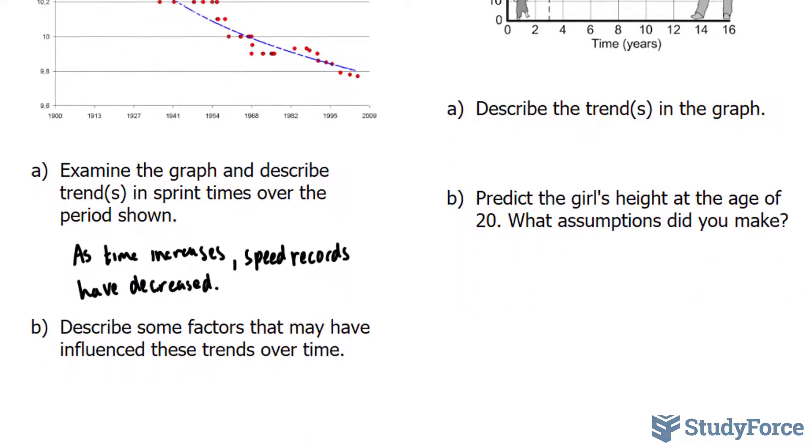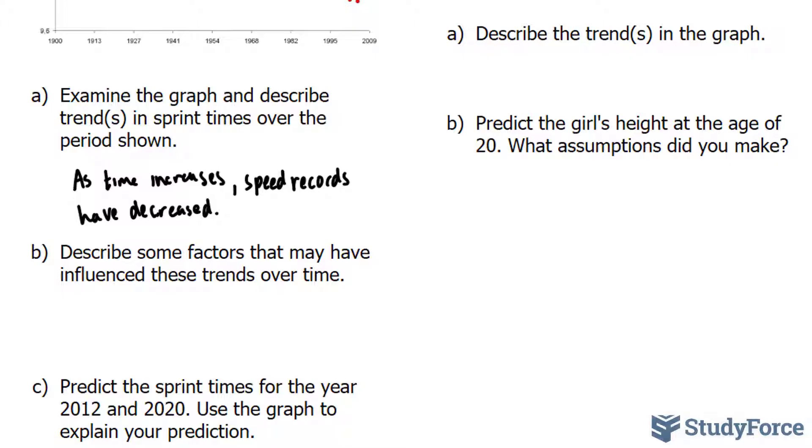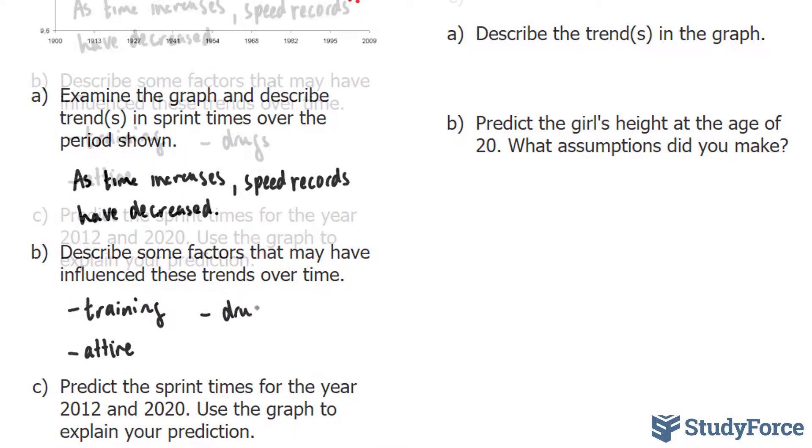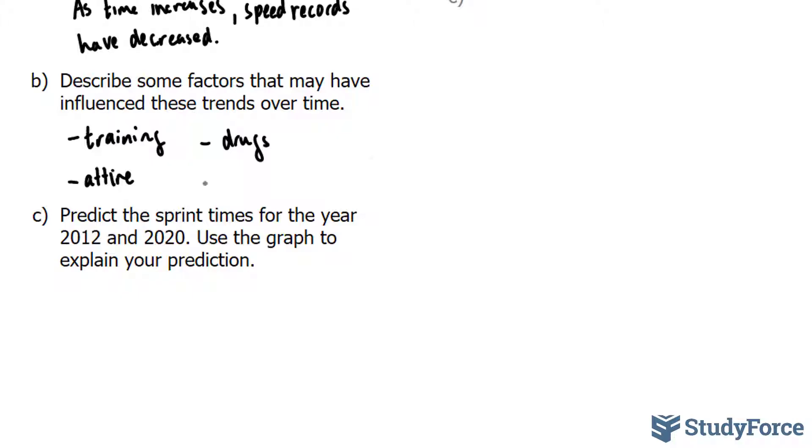Moving on to question B. Describe some factors that may have influenced these trends over time. Well, of course, training science has gotten better, so training. Possibly the usage of lighter clothes and better shoes, so attire. Maybe the introduction of drugs or medication. And lastly, training equipment.